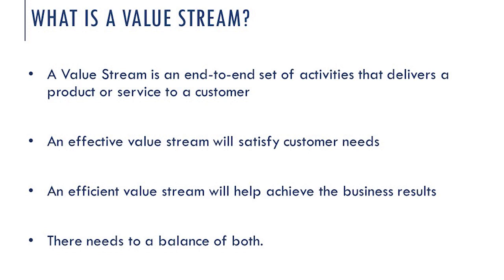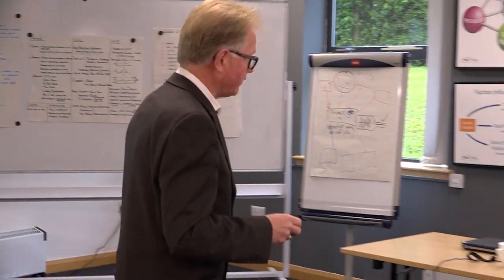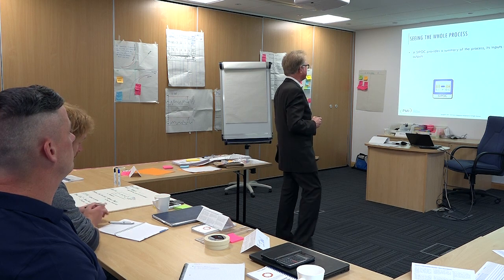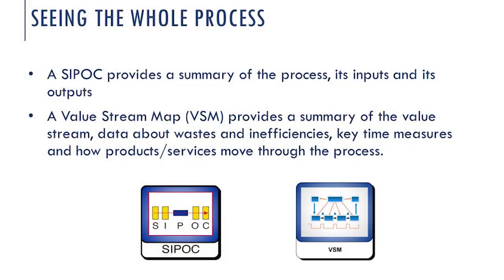There's a balance between achieving what the customer wants and delivering effective business results. The SIPOC provides a summary of the process, its inputs and its outputs. The value stream map adds certain levels of data above that — data about wastes and inefficiencies, some key time measures, and how products or services move through the process.